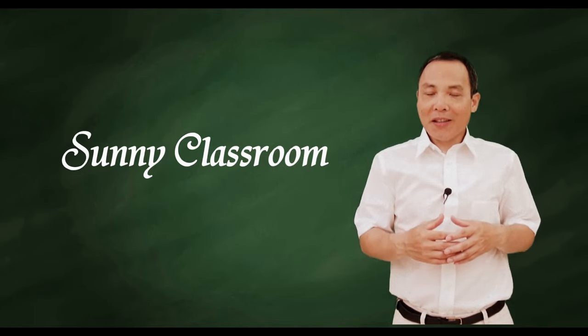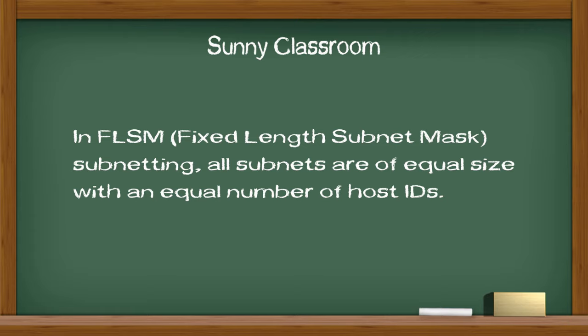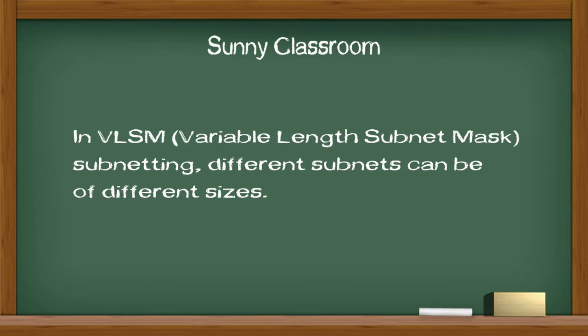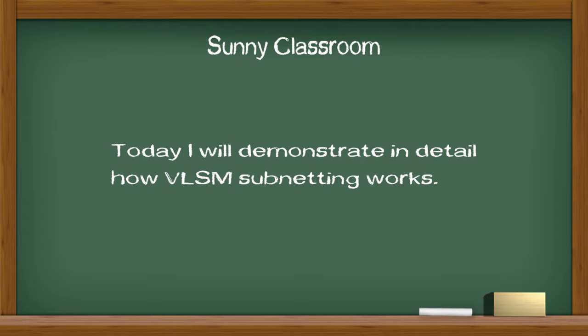Hello, and this is Sonny. Welcome back. In FLSM subnetting, all subnets are of equal size with an equal number of host IDs. In VLSM subnetting, different subnets can be of different sizes. This type of subnetting method is considered subnetting a subnet. VLSM subnetting makes more efficient use of a given IP range. Today, I will demonstrate in detail how VLSM subnetting works.